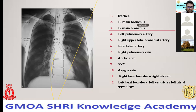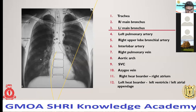Once you examine a chest X-ray, always make sure to check all four corners, because you might be dealing with a small extra-thoracic pathology even when there's no pathology inside the chest.